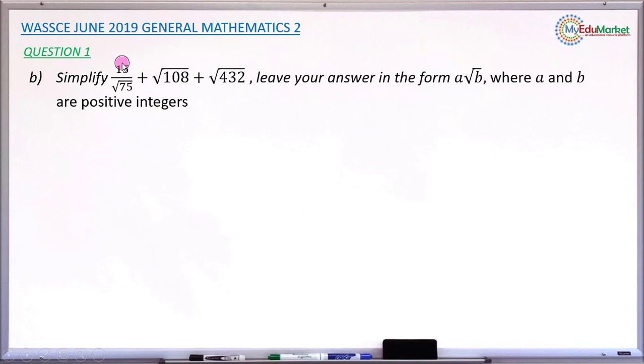This is WASSCE June 2019 general mathematics paper 2 and we are answering question number 1b. The question asks to simplify 15 over root 75 plus root 108 plus root 432. You are required to leave your answer in the form a root b, in surd form, where a and b are both positive integers.